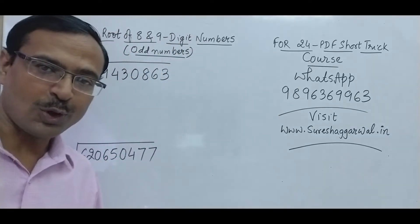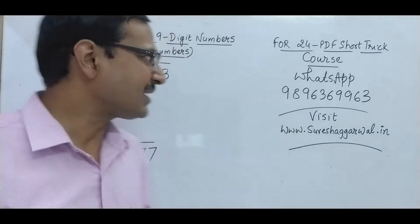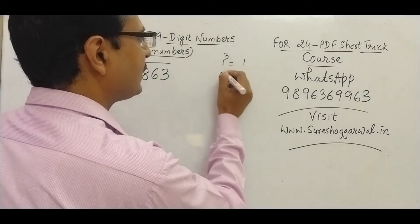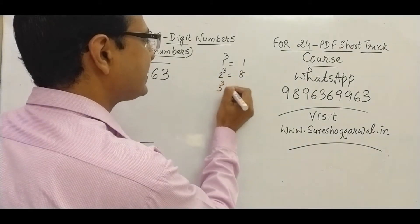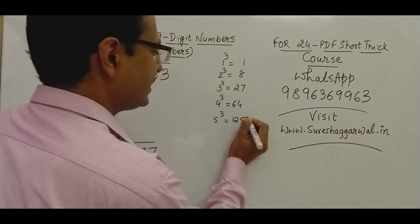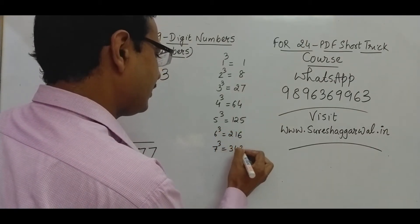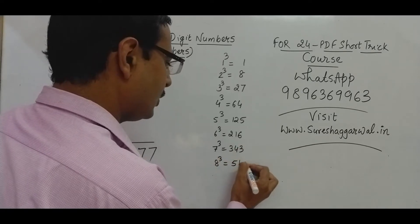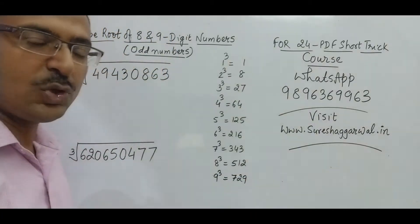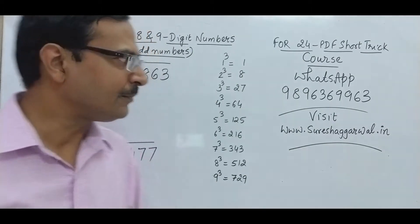Coming back to the trick — cube roots of eight and nine digit numbers. The first concept you need to know: the cubes of single digit numbers — 1 cube is 1, 2 cube is 8, 3 cube is 27, 4 cube is 64, 5 cube is 125, 6 cube is 216, 7 cube is 343, 8 cube is 512, 9 cube is 729. Remembering the cubes of the first nine natural numbers is enough for this trick.